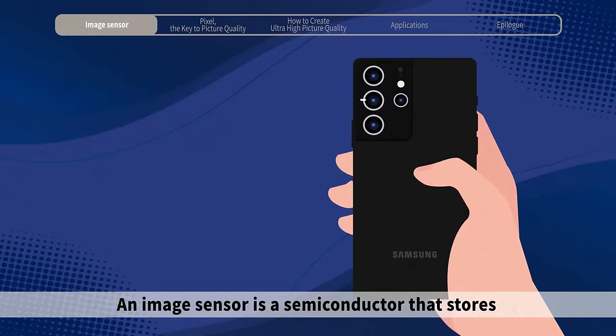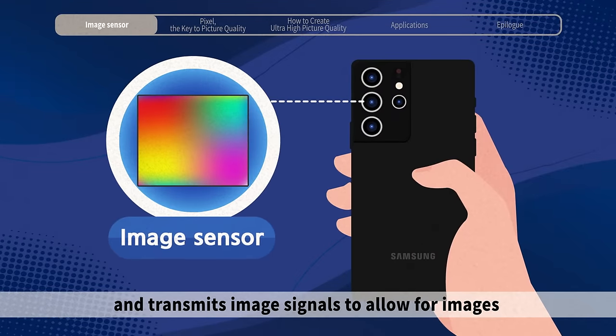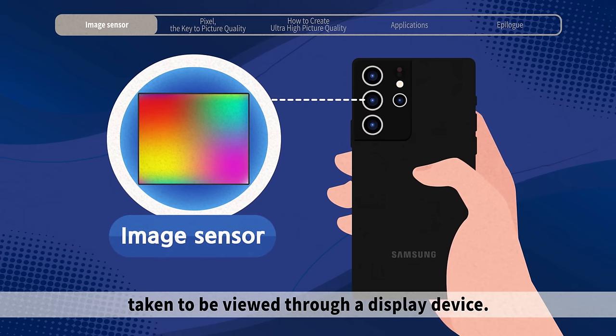An image sensor is a semiconductor that stores and transmits image signals to allow for images taken to be viewed through a display device.